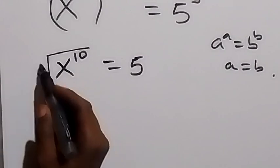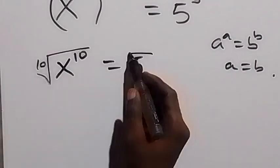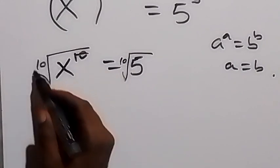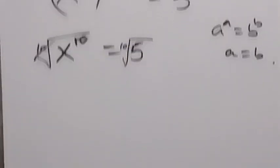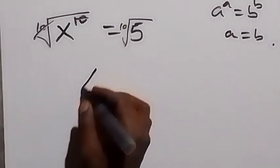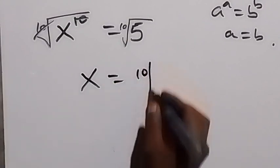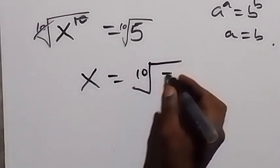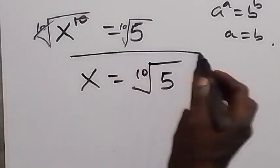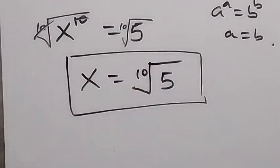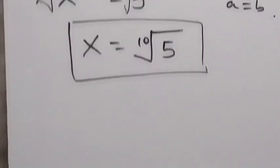Since we are finding the value of x, we remove the power of 10 by taking the 10th root of both sides. Taking the 10th root on both sides, the 10 cancels the 10th root, and we are left with x which equals the 10th root of 5. So we have a solution to the problem: x equals the 10th root of 5.